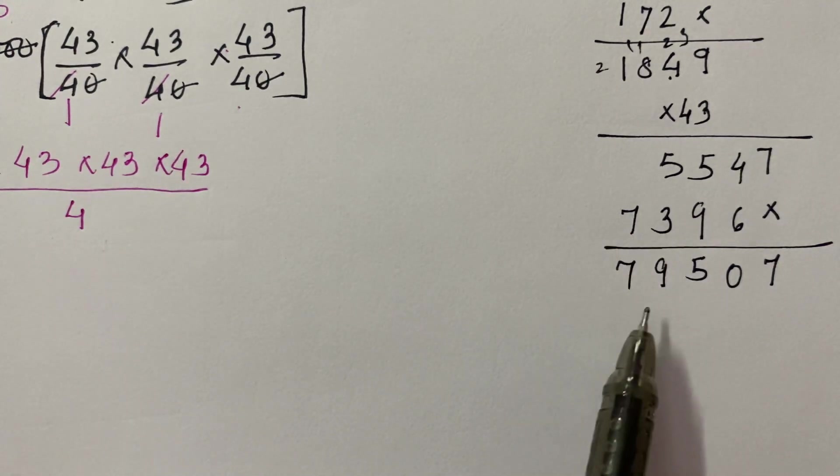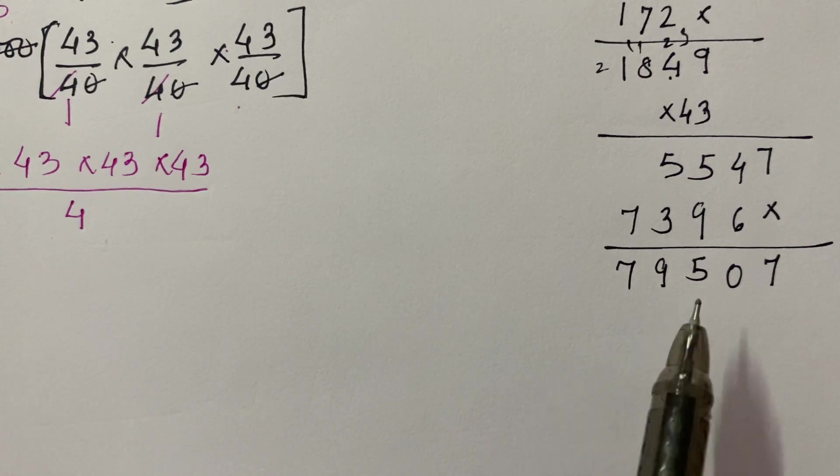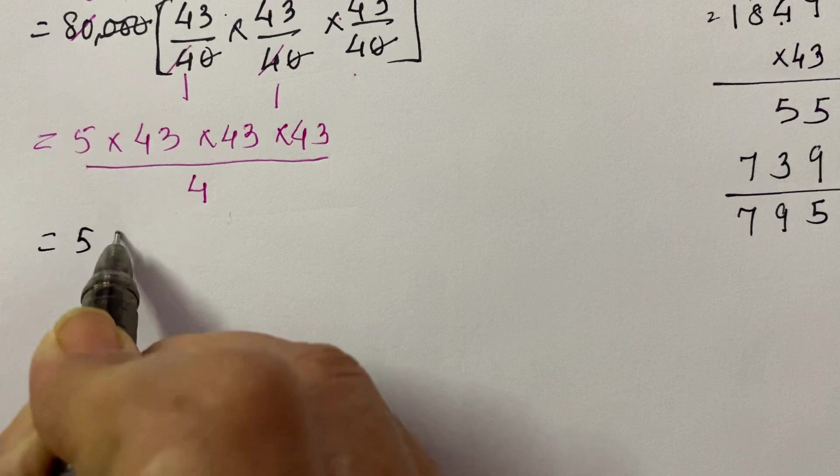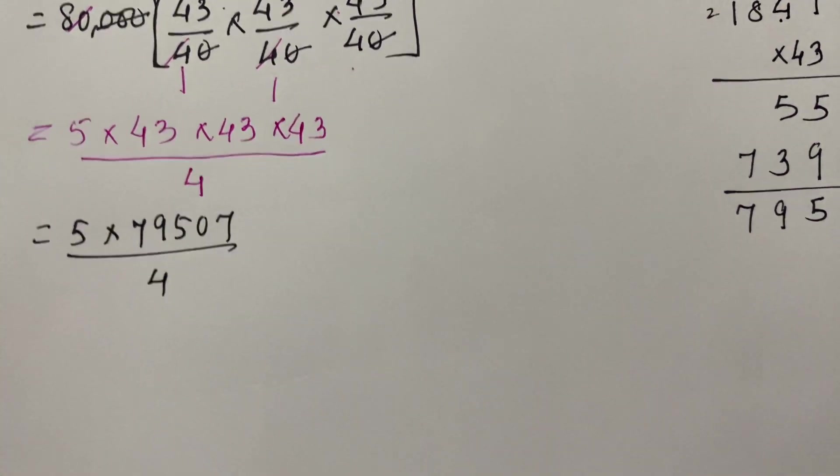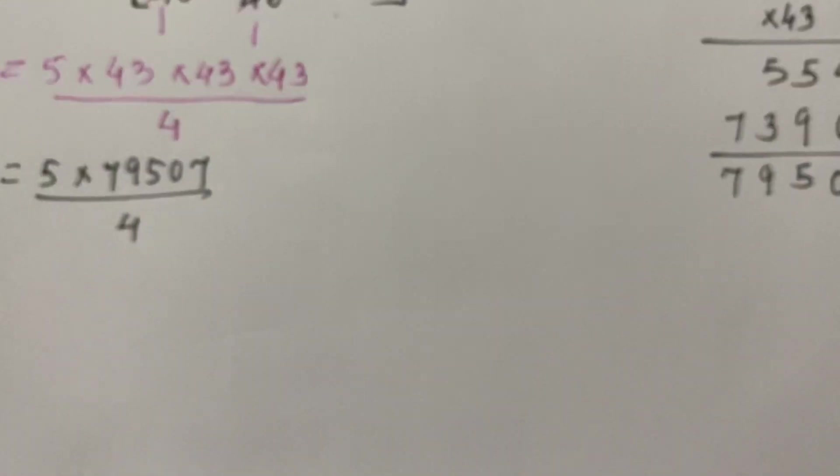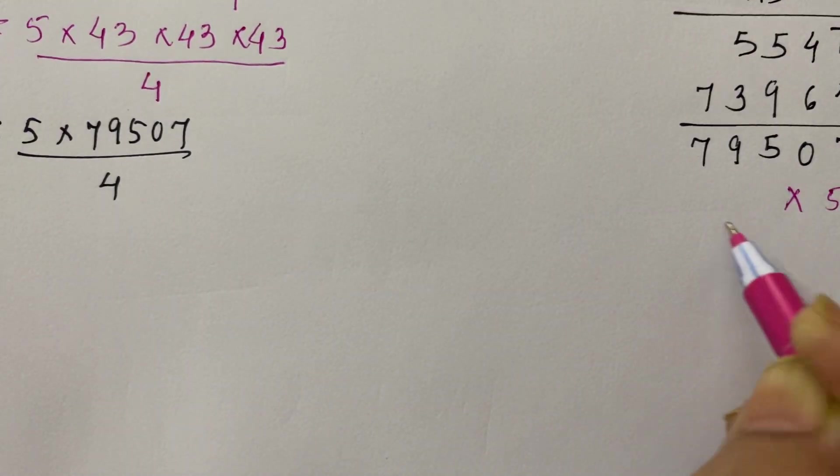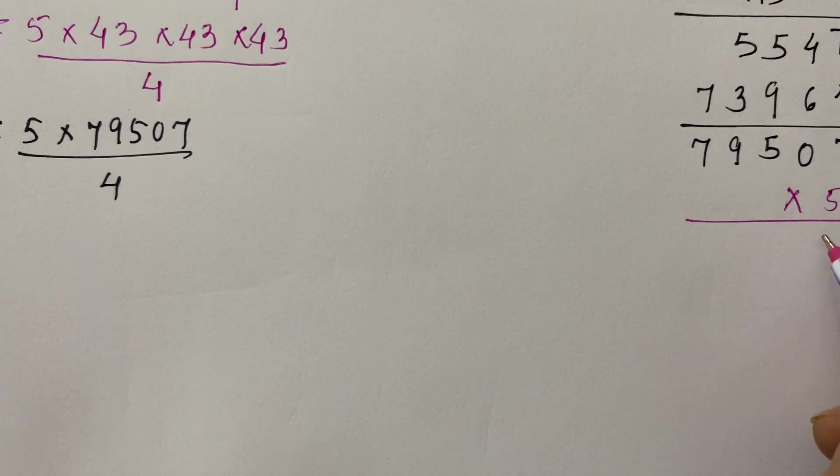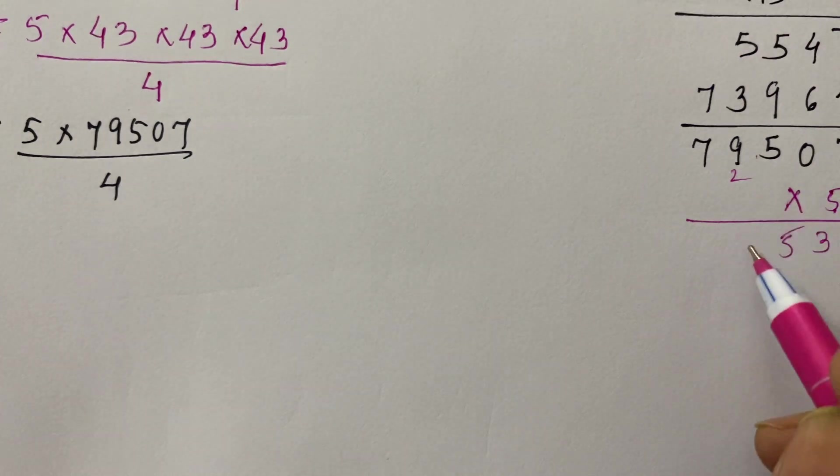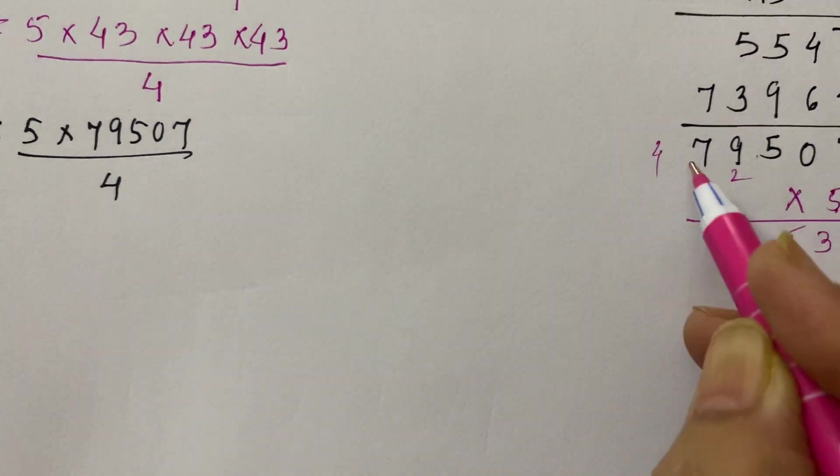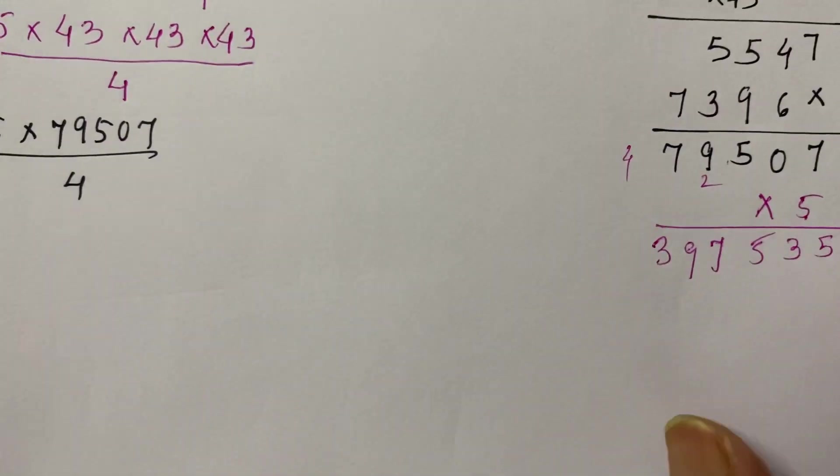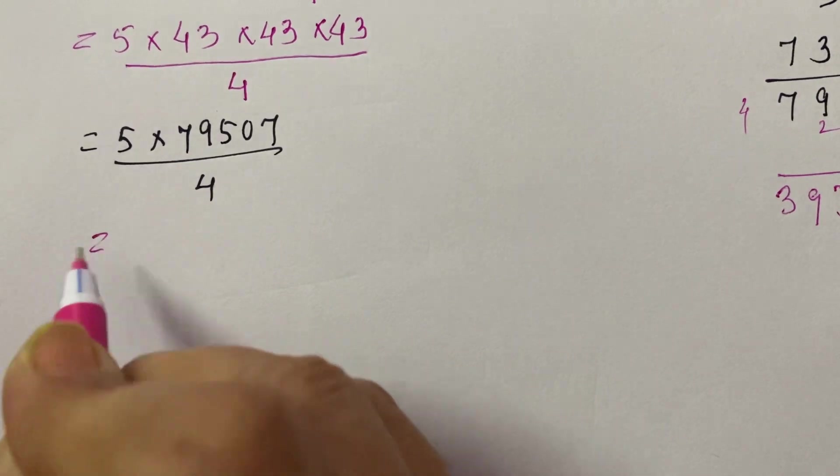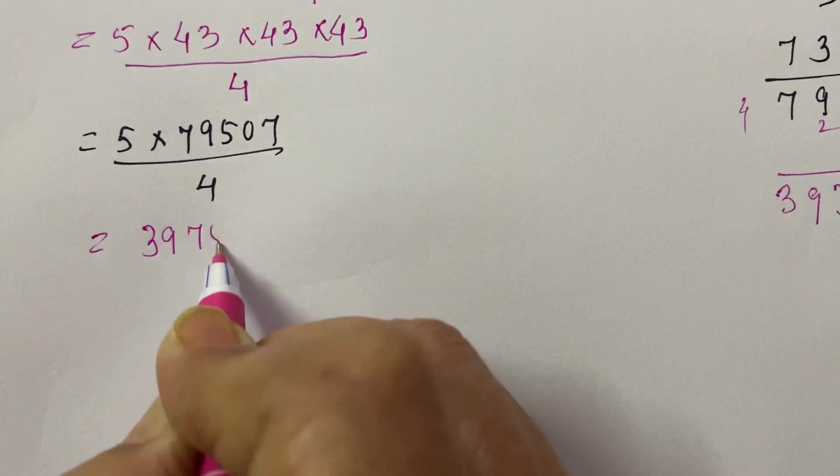So the amount comes out to be, presently the product of 3 forty-threes is 79,507. We'll write this here: 5 into 79,507 divided by 4. Now multiply this by 5: 5 sevens are 35, 5 fives are 25, 9 fives are 45 and 2, 47, 7 fives are 35, 35 plus 4 is 39. So you have now 397,535.